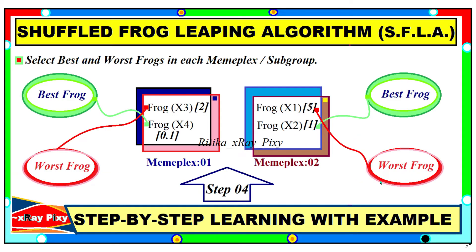In step four, we select the best and worst frog in each subgroup. For the first subgroup, we consider the minimum fitness value as the best frog and the maximum value as the worst frog. For example, if the fourth frog has a value of 0.1 (the minimum), it is the best, and the third frog with the maximum value is the worst. The same logic applies for the second subgroup.